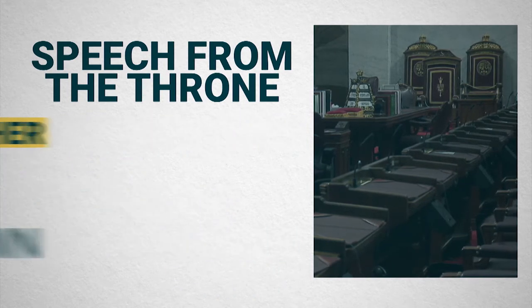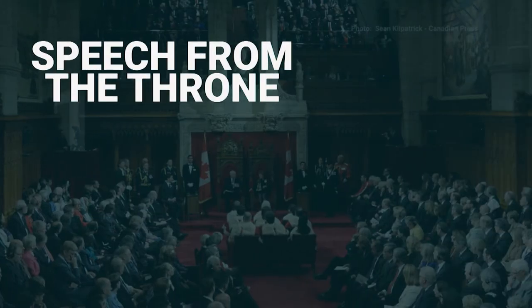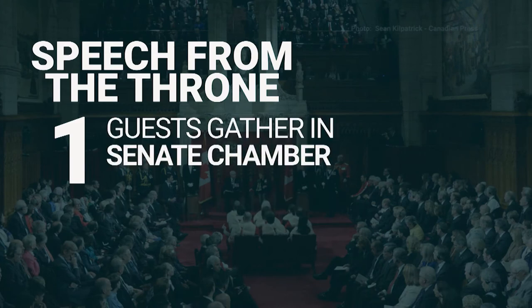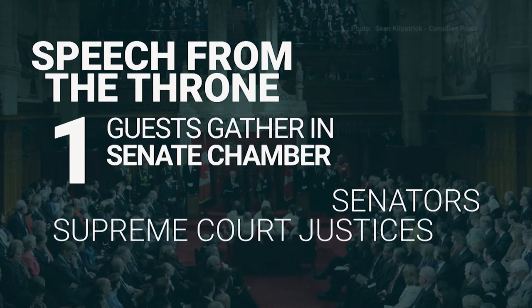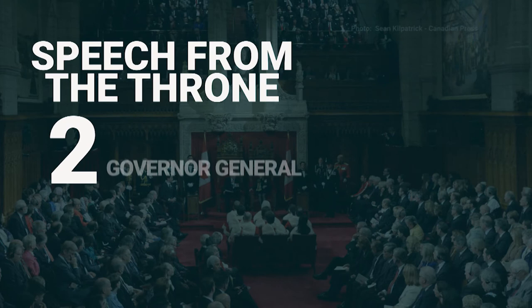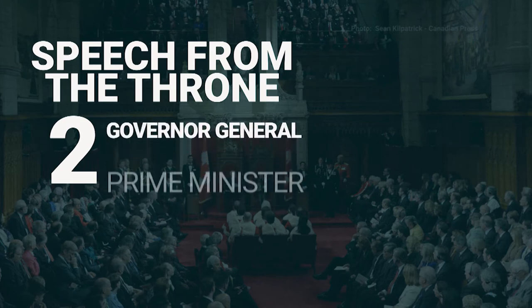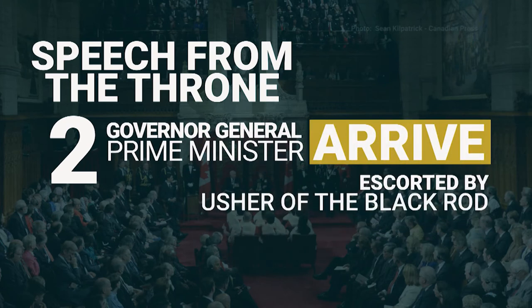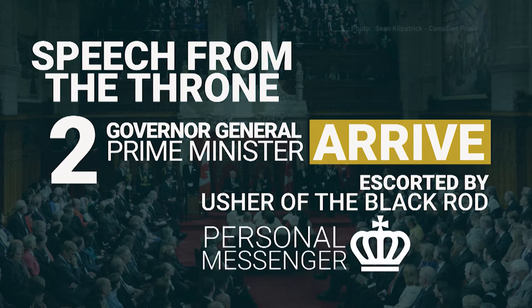So how does it happen? To start, guests gather in the Senate chamber, including Senators and Supreme Court Justices. Then the Governor General and the Prime Minister arrive, escorted into the chamber by the Usher of the Black Rod, who is the personal messenger of the Queen or the Governor General.